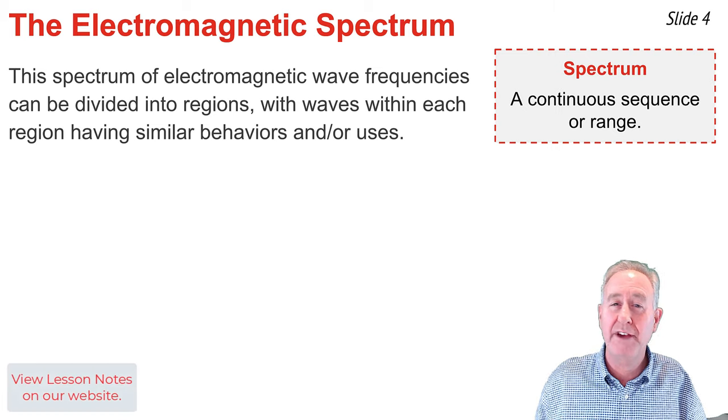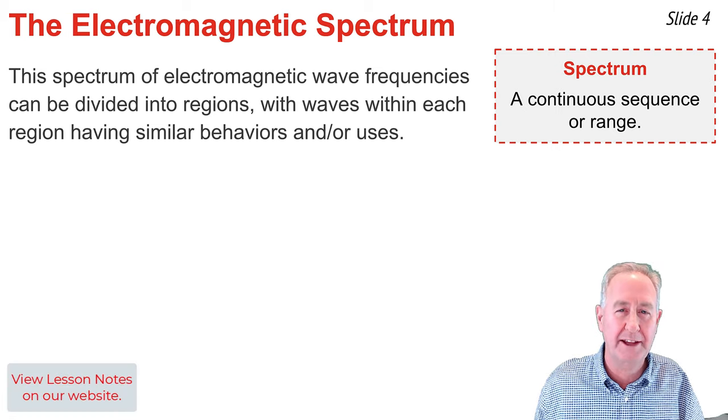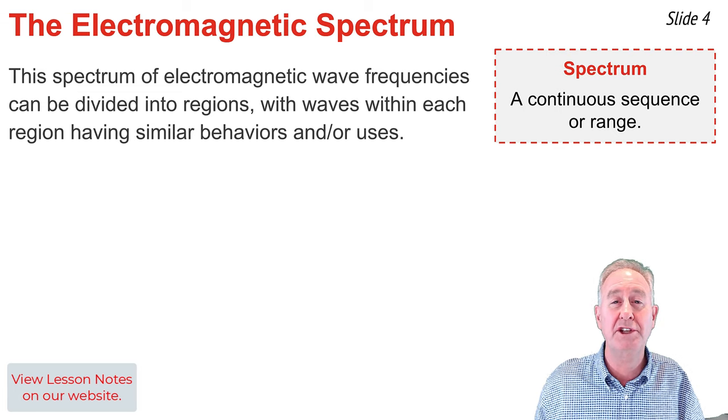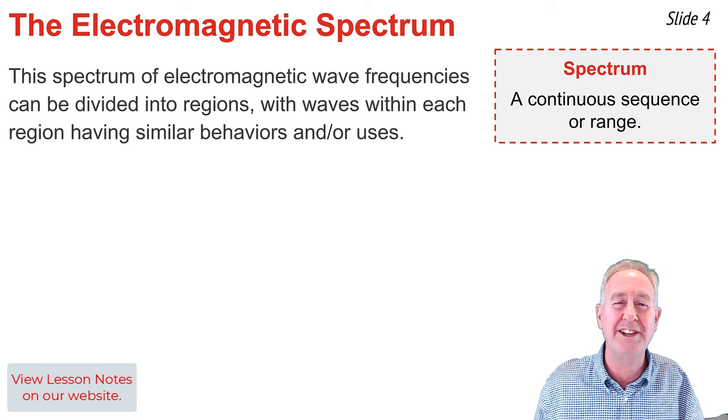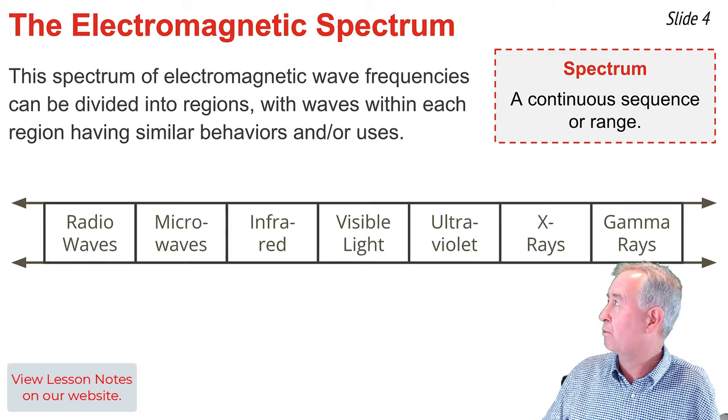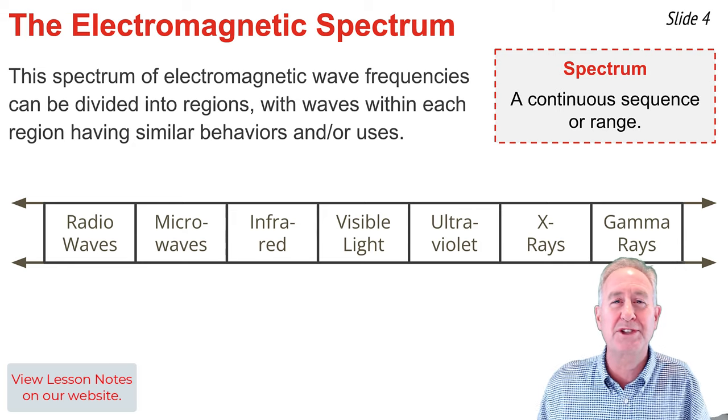Electromagnetic waves exist with a vast range of frequencies which we refer to as the electromagnetic spectrum. The spectrum is further subdivided into regions with waves in each region having similar behaviors and uses. This diagram portrays the electromagnetic spectrum with the various regions labeled.